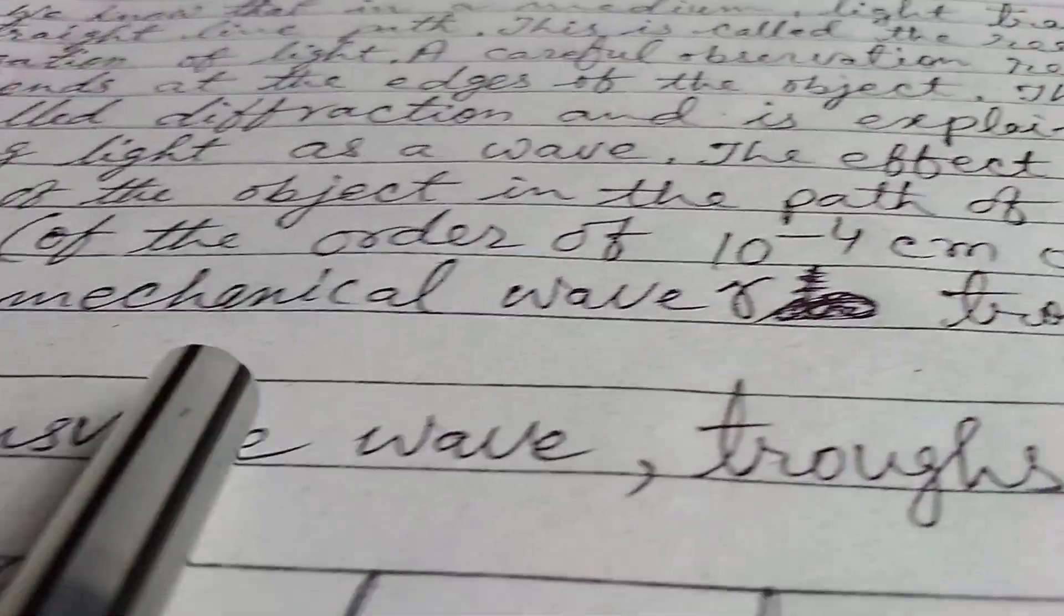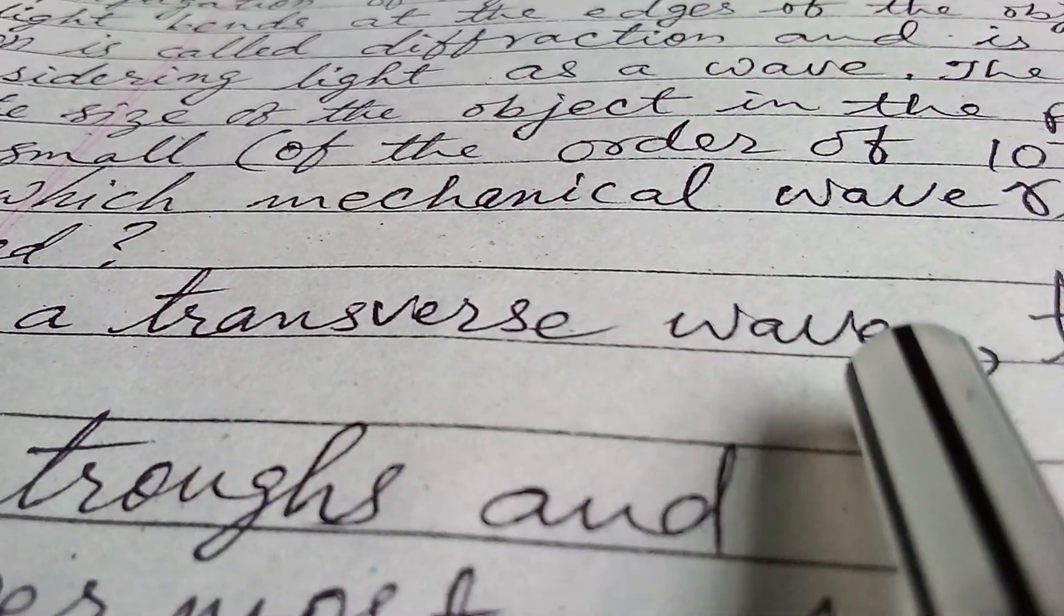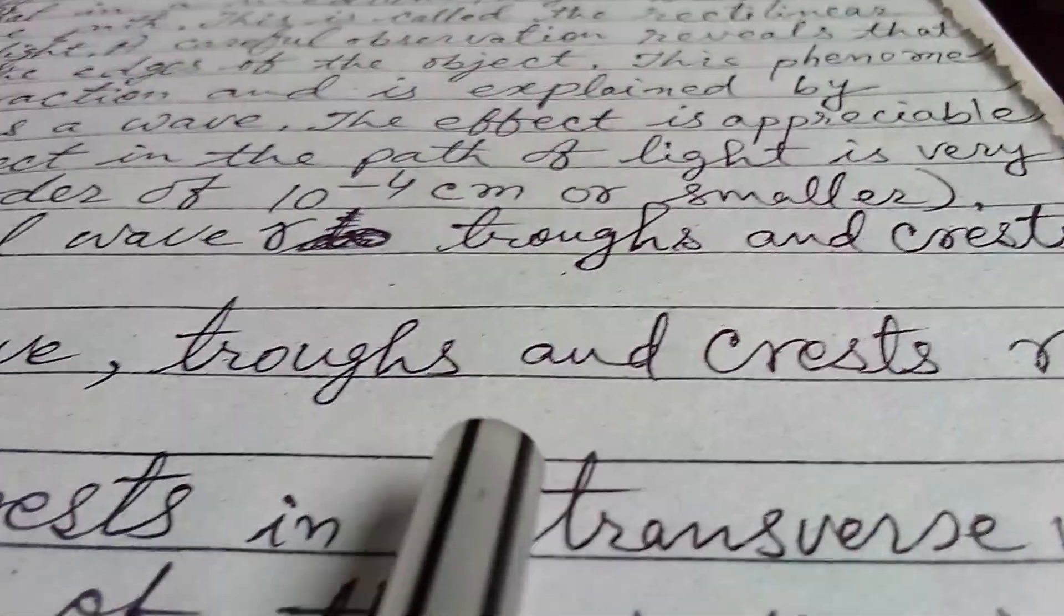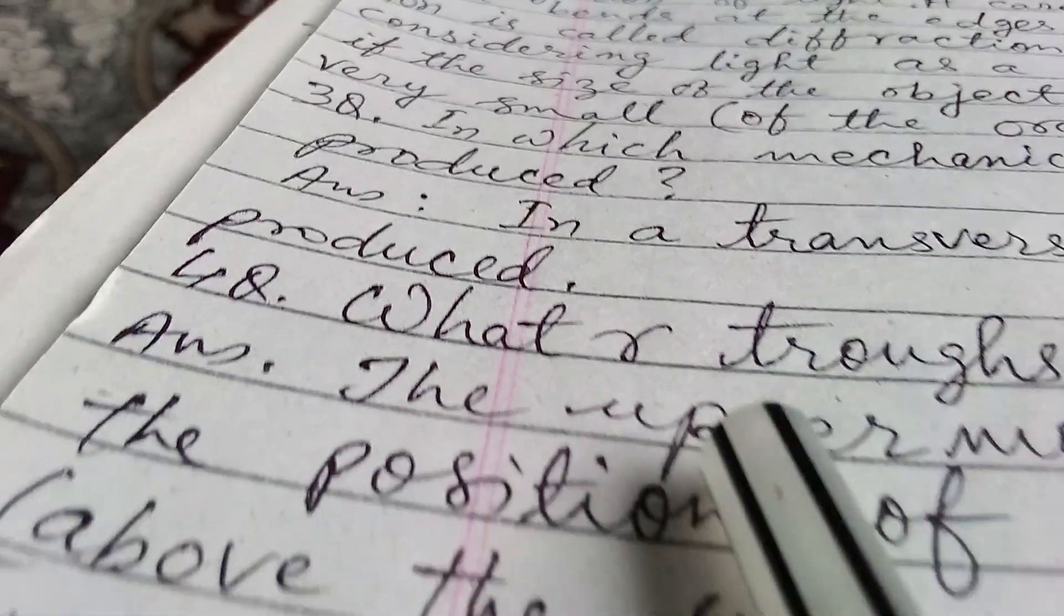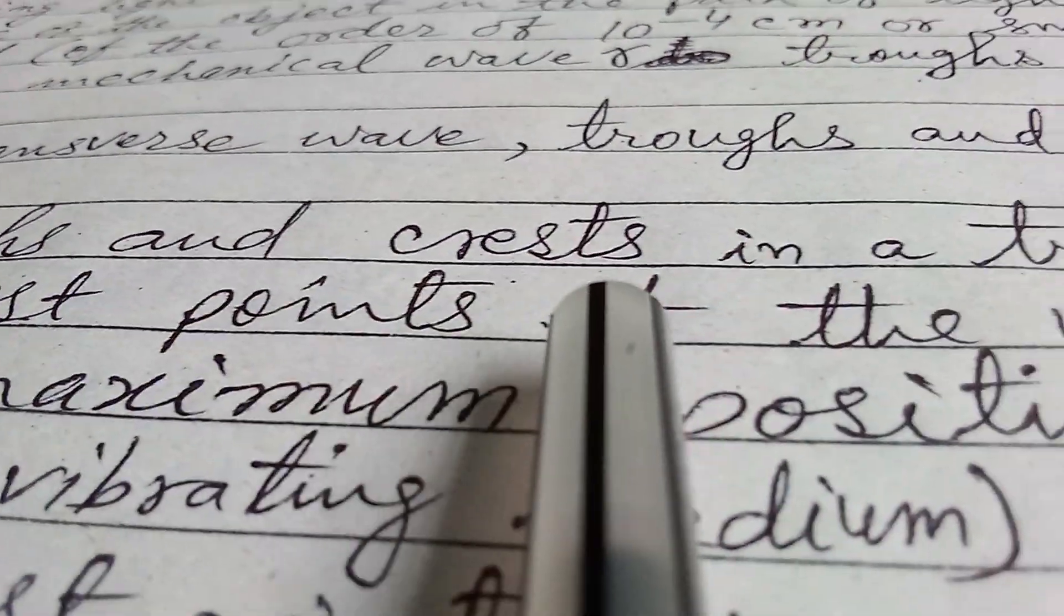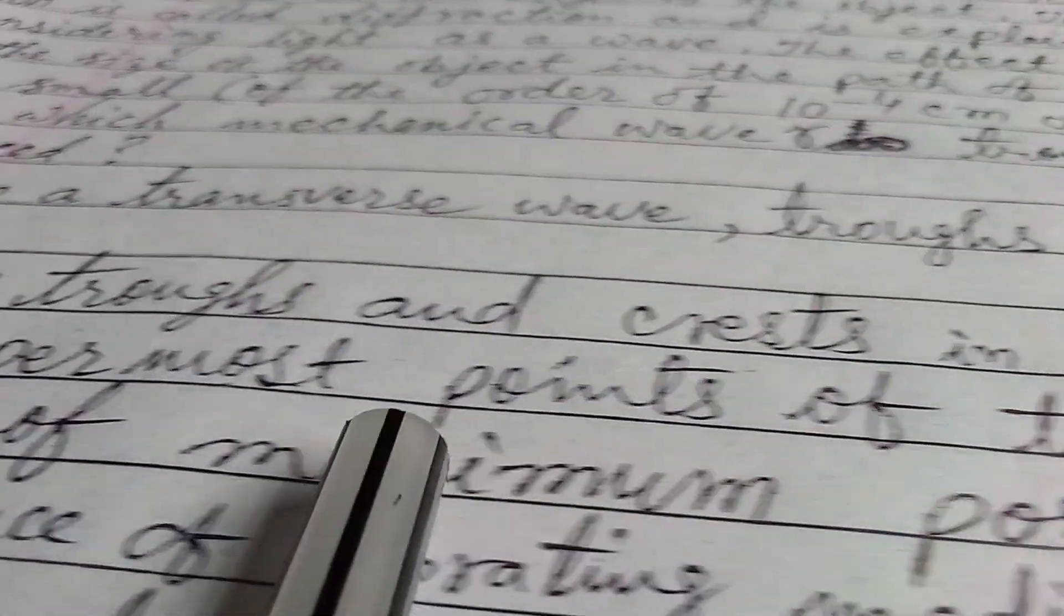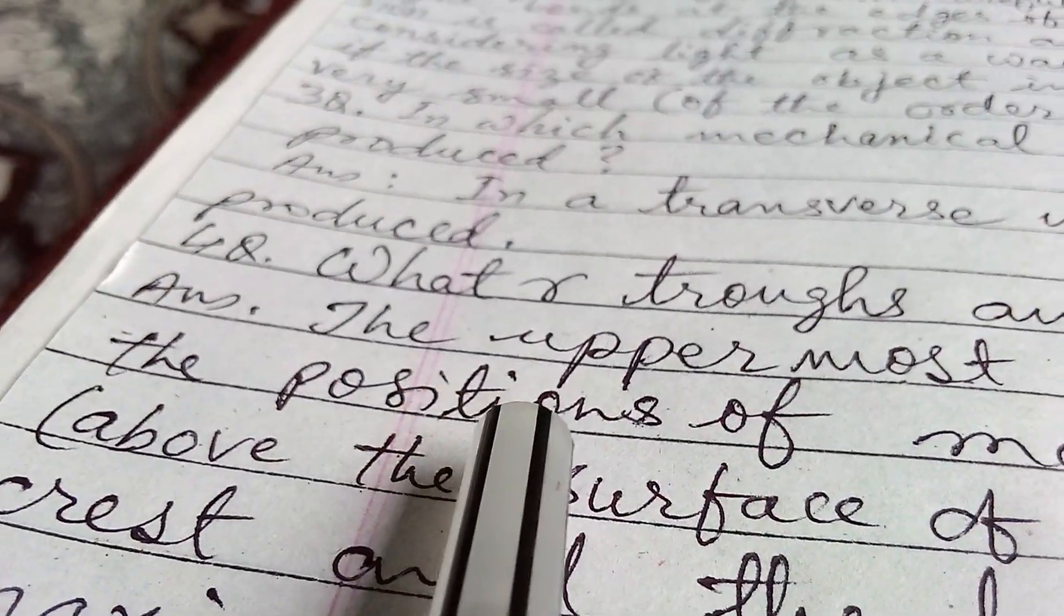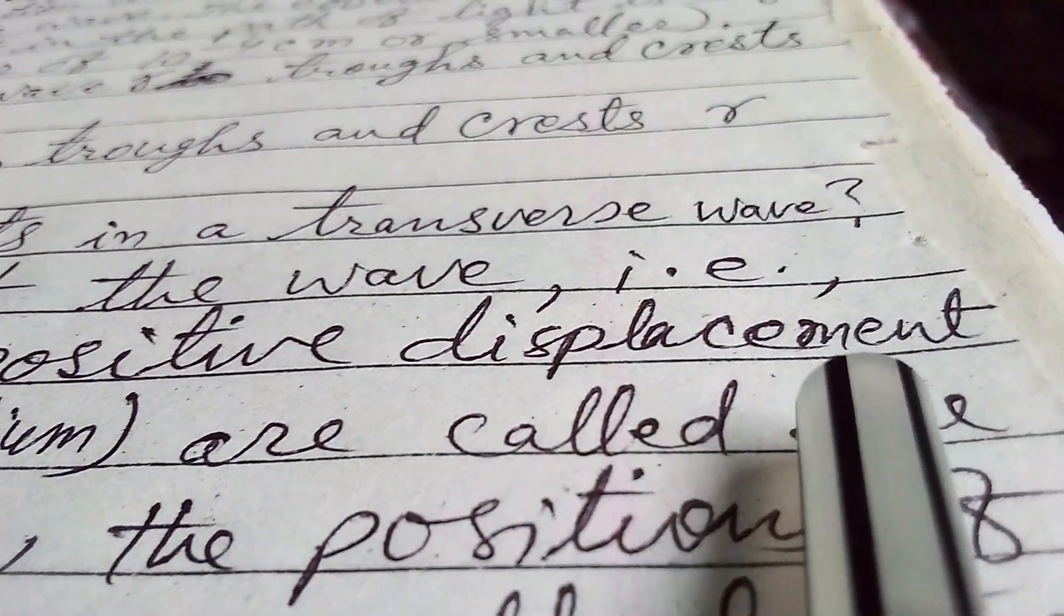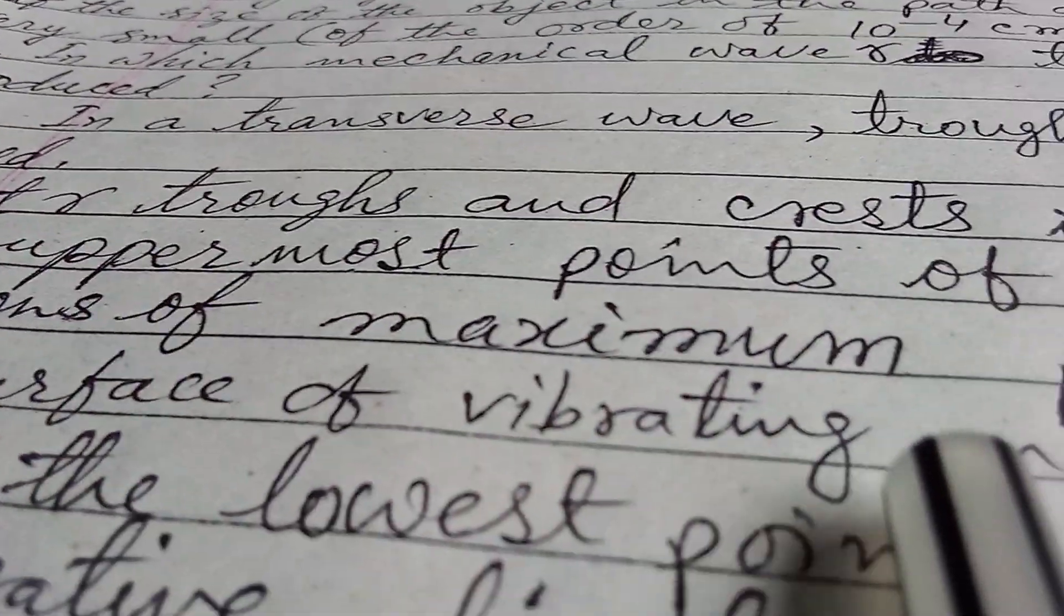Answer: in a transverse wave, troughs and crests are produced. Fourth question: what are troughs and crests in a transverse wave? Answer: the uppermost points of the wave, that is, the positions of maximum positive displacement...